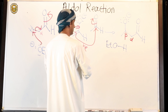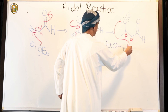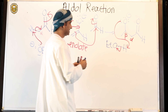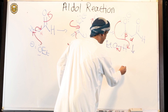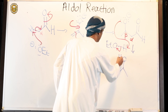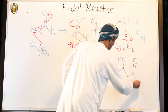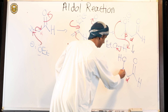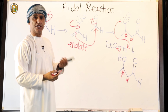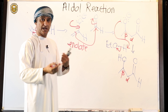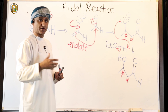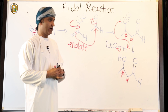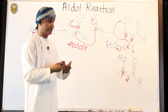The alcoxide picks up a proton from ethanol to give the beta-hydroxy aldehyde, plus the ethoxide ion is regenerated and thus can be reused and recycled. This is the description of catalytic — a catalyst is never consumed; it is always used and reused.